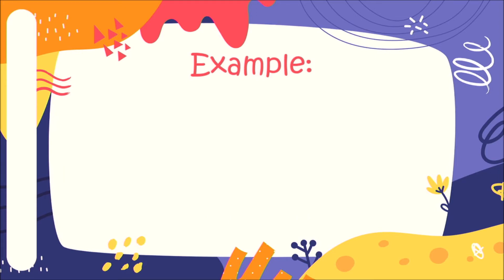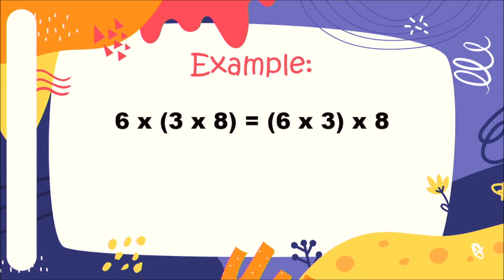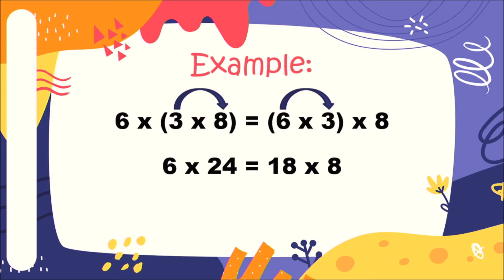Another example: 6 × (3 × 8) is equal to (6 × 3) × 8. We just regroup the numbers. Three times eight equals 24, and six times three equals 18. Then six times 24 equals 144 and 18 times 8 equals 144. Remember: in associative property of multiplication, even with different groupings of numbers, the products are also the same.